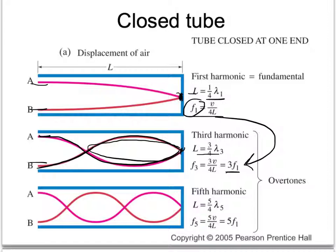You couldn't possibly get the second harmonic in a tube open at one end — you'd have to have an anti-node on both ends, and that's not possible because we've stopped the air at the closed end. Adding another half wavelength skips us to the fifth harmonic by the same rationale: one and a quarter wavelengths, or five fourths wavelengths. Solving for frequency gives five times the first harmonic. So a tube closed at one end can only have odd harmonics.